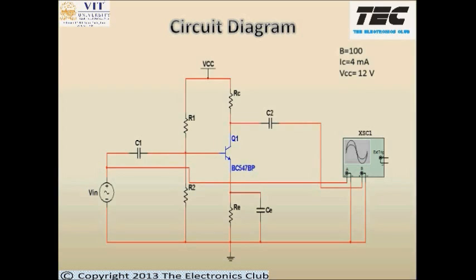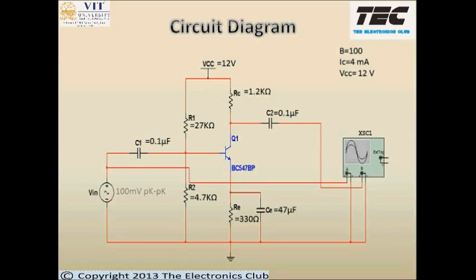This is the circuit diagram for our common emitter amplifier. The initial specifications taken are: beta equal to 100, collector current equal to 4 milliamps, VCC equal to 12 volts, and the transistor taken is BC547 BP. According to our calculations: RC is equal to 1.2 kilo ohms, R1 27 kilo ohms, R2 4.7 kilo ohms, RE 330 ohms, C1 0.1 microfarad, C2 0.1 microfarad, CE 47 microfarad, and the input voltage signal is equal to 100 millivolt peak to peak.